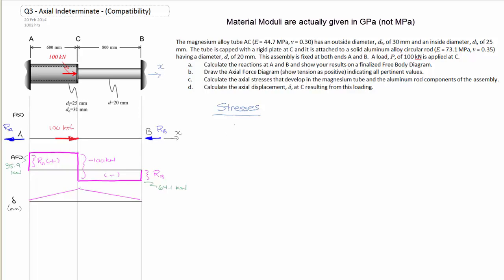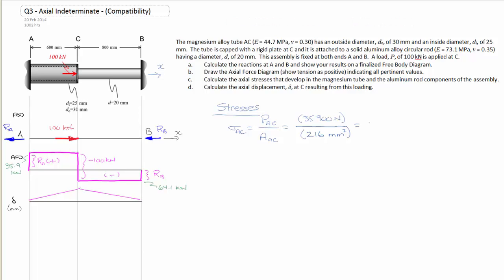I've labeled the stresses. Our formula for stress between A and C is equal to the internal load P_AC divided by the area of AC. We get P_AC off our axial force diagram — it is 35.9 kilonewtons, or 35,900 newtons, divided by the area of 216 millimeters squared. Calculating that out, we get 166 megapascals, which is positive, and that's tension.